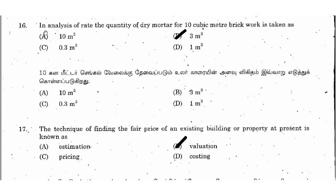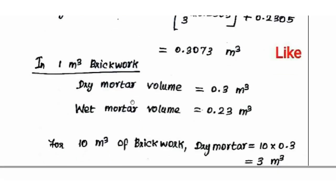In analysis of rates, the quantity of dry mortar for 10 cubic meter brickwork is taken as what? For 10 cubic meter brickwork, the dry mortar volume — the right answer is option B: 3 m³. For 1 m³ brickwork, dry mortar volume is 0.3 m³ and wet mortar volume is 0.23 m³. After 10 m³ brickwork, dry mortar volume is 10 × 0.3 = 3 m³.